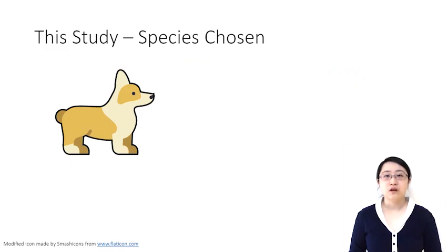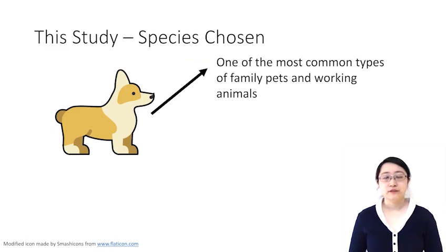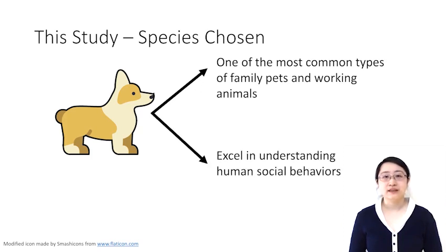In this study, we chose to study dogs for two reasons. First, dogs are one of the most common types of pets at home and working animals. Second, they excel in understanding human social behaviors even better than non-human primates, such as chimpanzees and gorillas.